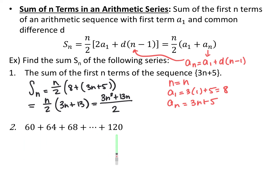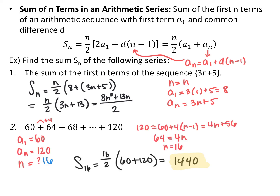For the next example, a series is written out with first term 60, nth term 120, and common difference 4, but we don't know n. Using the explicit formula: 120 equals 60 plus 4 times (n minus 1), solving gives n equals 16. So S sub 16 equals (16 over 2) times (60 plus 120), which equals 1,440.